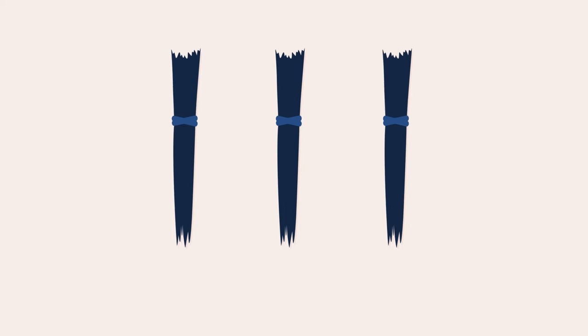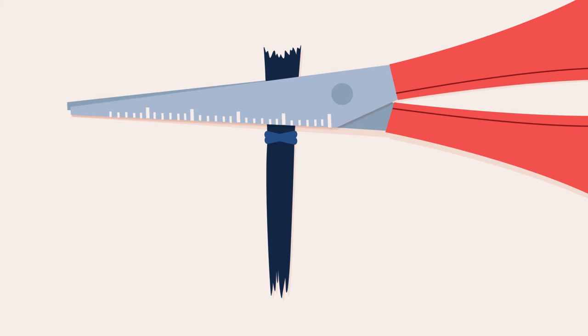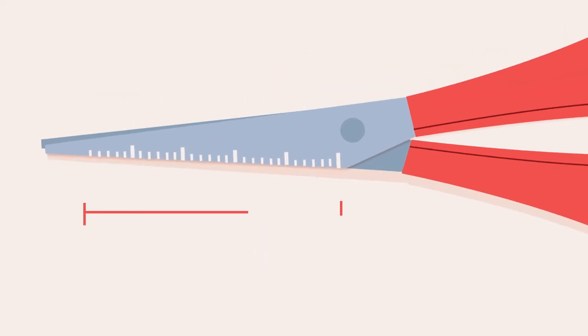Cut the hair sample as close as possible to the scalp, using the scissors provided. You can measure the width of the hair sample using the ruler on the blades of the scissors.